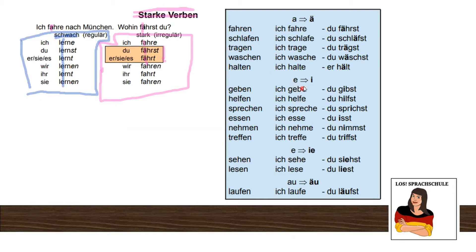The second group: e becomes i. Geben, to give — ich gebe, du gibst. Helfen, to help — ich helfe, du hilfst. Sprechen, to speak — ich spreche, du sprichst. Essen, to eat — ich esse, du isst. Here it's a little special because the stem already has an e, giving us the double-s. Nehmen, to take — ich nehme, du nimmst. Treffen, to meet — ich treffe, du triffst.